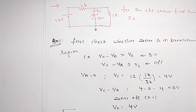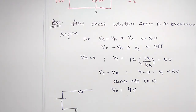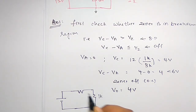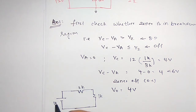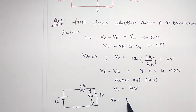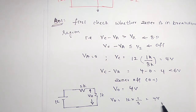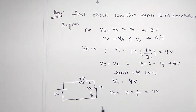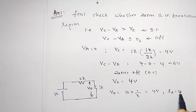You can redraw the circuit as: 12 volts, 2 kilo ohms, and as the Zener is in off state it is open circuit, and 1 kilo ohm — a simple series circuit. So voltage divides: V0 equals 12 into 1 by 3, which is 4 volts. And as the Zener is in off state, IZ will be equal to 0.